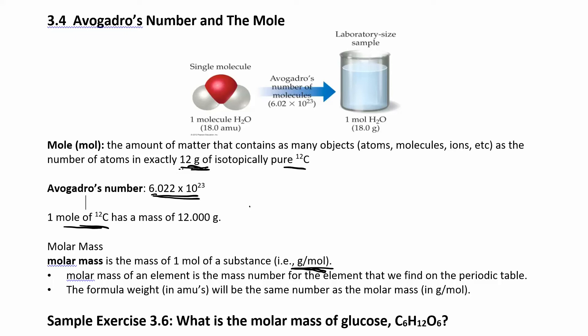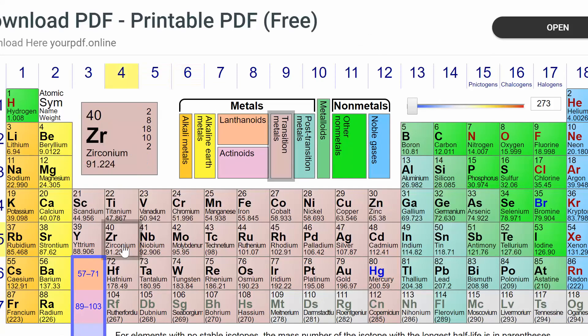So the molar mass, we're gonna be able to find that for an element in the periodic table. So let's go back to our periodic table and you can see here, here's carbon. So carbon here says 12.011. Before we were calling that atomic mass units, 12.011 atomic mass units is the mass of one atom of carbon.